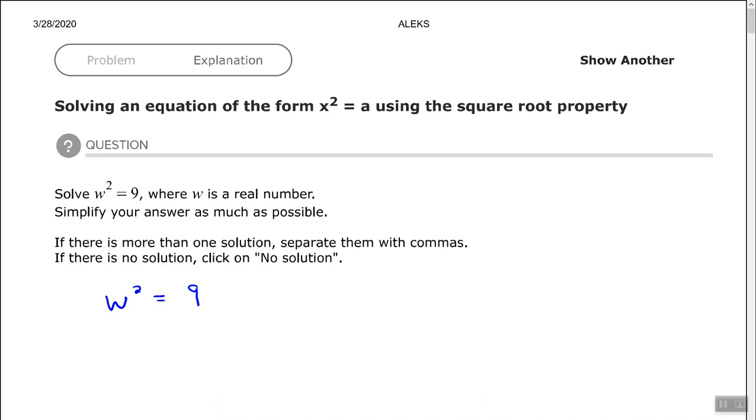Remember, the square root of a square equals a. To undo this square, we take the square root of each side. But keep in mind, there are two real numbers that we could square that will give us positive nine.